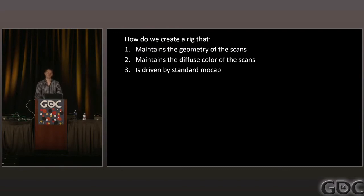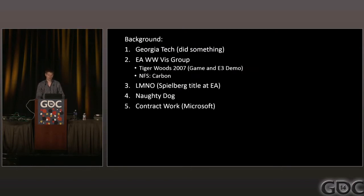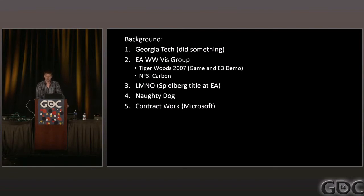The goal is to get good geometry, keep the diffuse color of the scans in the animatable data, and drive this with motion capture. My background: I did work at Georgia Tech, then worked in the worldwide viz group on the Tiger Woods demo at E3 2006. I worked on the cancelled LMNO title — the last game Spielberg worked on. Then I worked at Naughty Dog on Uncharted 2 and 3, and since then I've been doing contract work mostly for Microsoft.